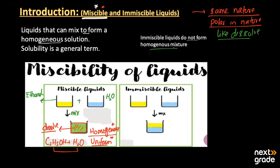On the other hand, immiscible liquids are those that do not form a homogeneous mixture. For example, when we take oil and water and mix them, we see that it separates into two different layers — a top layer and a bottom layer — because these liquids do not dissolve into each other.